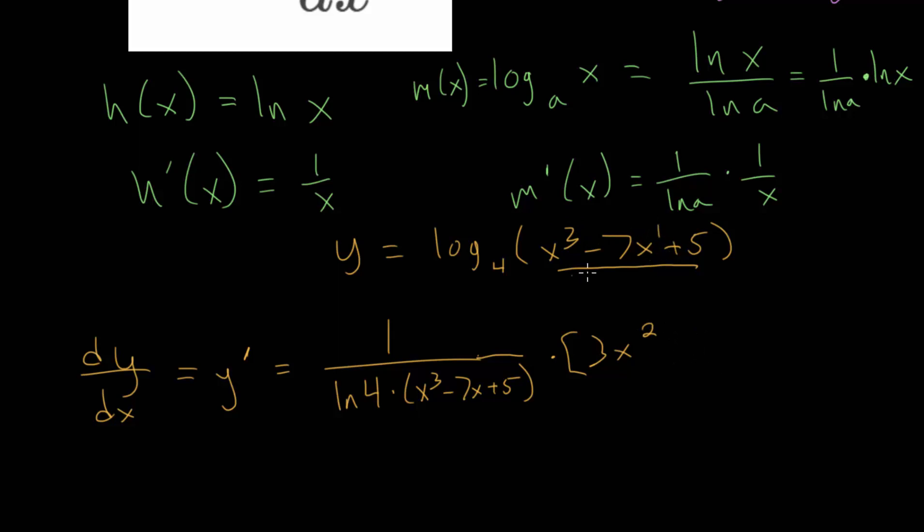For this next term, we have minus 7x to the first power. We can bring down the 1. We're again just using that power rule. And 1 times negative 7 is still negative 7.